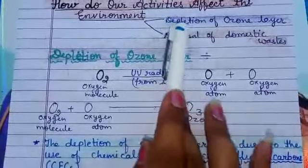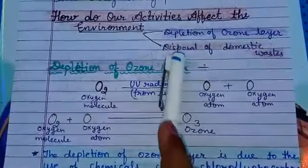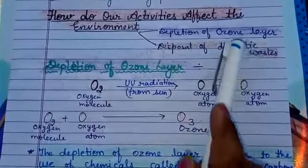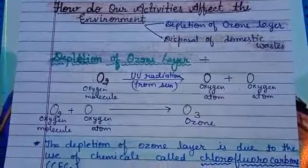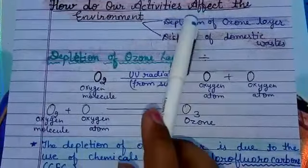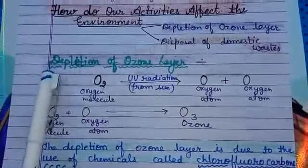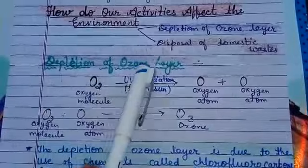The first is depletion of the ozone layer, and the next one is disposal of domestic waste. We will discuss them one by one. First is depletion of the ozone layer.